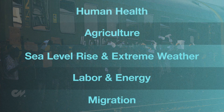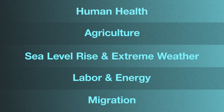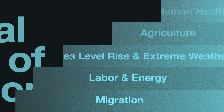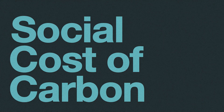You might be wondering: is there a way to take all of these numbers and combine them into a single number that represents the costs of greenhouse gas emissions? The answer is yes. That number is called the social cost of carbon, and it's the subject of one of our forthcoming episodes. For more information and to listen to the full podcast with Ian Bolliger, go to our website, climatenow.com.